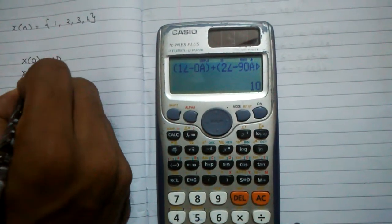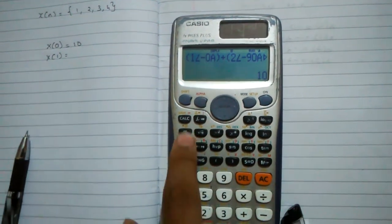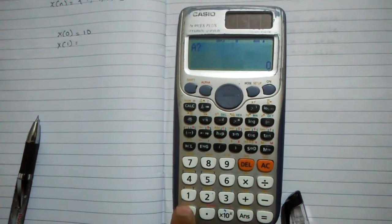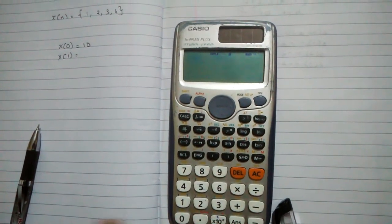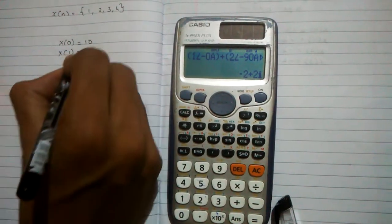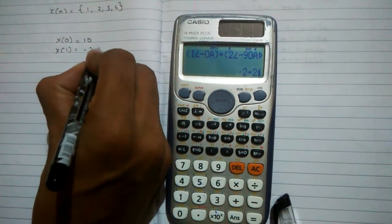Then x of 1 equals, so hit calculate again. Then plus 1 and hit equals. x of 1 is equal to minus 2 plus 2i.